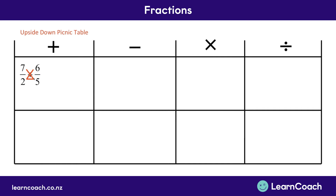And finally, we're going to have to multiply the two by the five down the bottom. Now putting this all together, this is the same as saying we have the five times seven — and that bottom one always goes up to the top — plus, which is the plus from the middle of the fraction, two times six, which is the two from the bottom being multiplied by the six up the top, and then that's all divided by the two bottom ones multiplied together, the two times five. That is our upside-down picnic table.